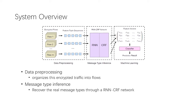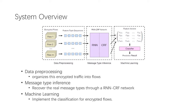For all input encrypted flows, the RNN-CRF network tries to recover the real message types of encrypted handshake messages through rigorous analysis of feature tuple sequences and outputs the predicted message type sequences — this is called message type inference. Based on the real message types inferred, we format the sequence of feature tuples into a uniform vector of message lengths, where each dimension stores the length of a specific message type. Finally, we train a classifier for the uniform vectors through supervised machine learning and implement classification for other encrypted flows.